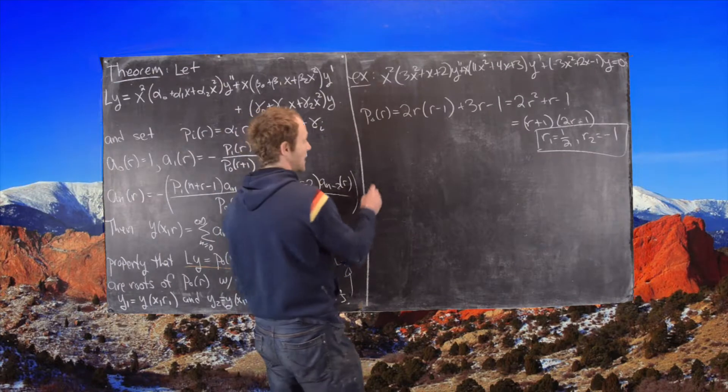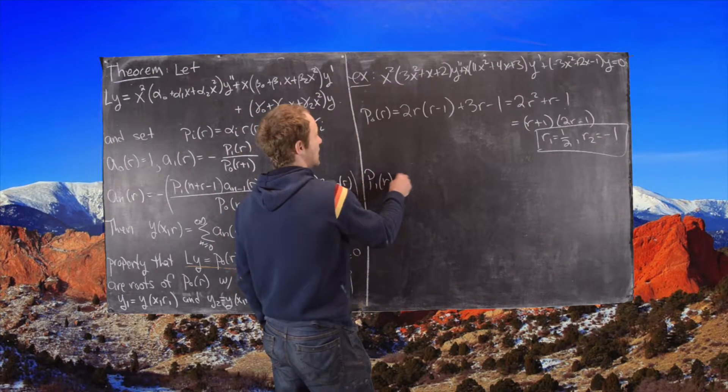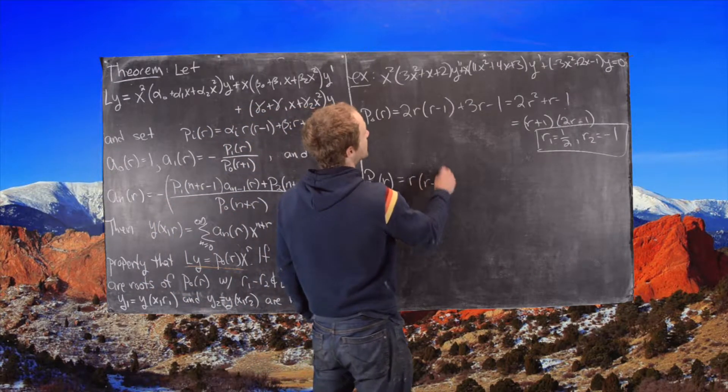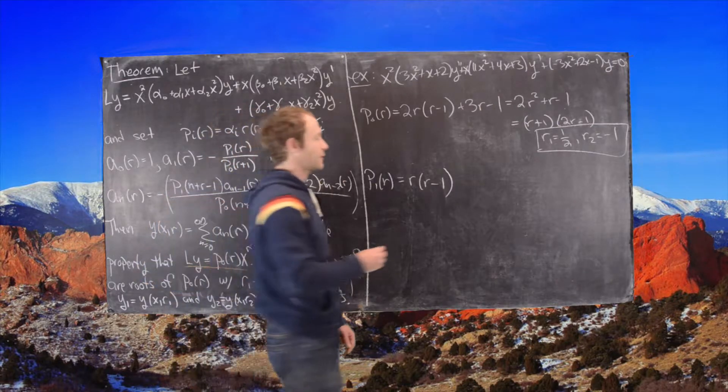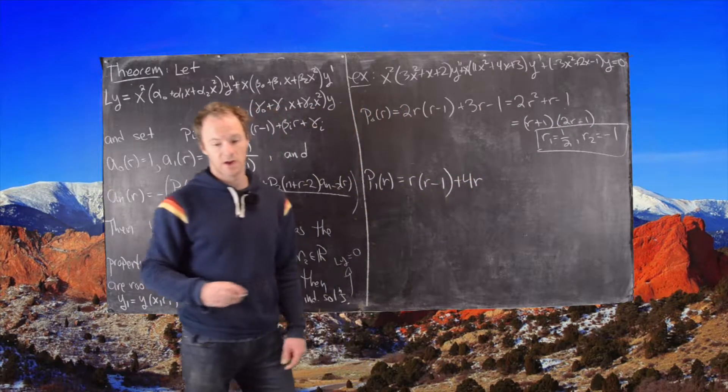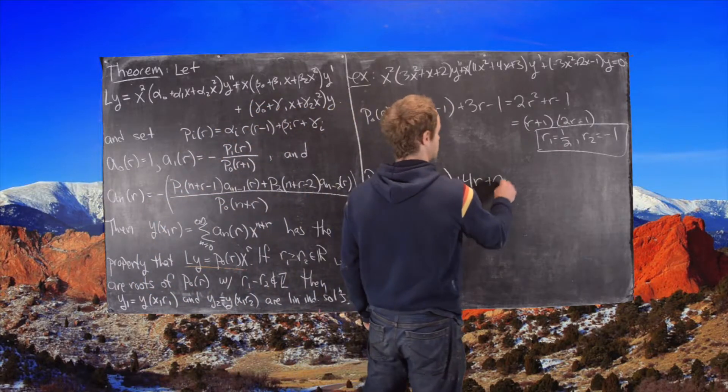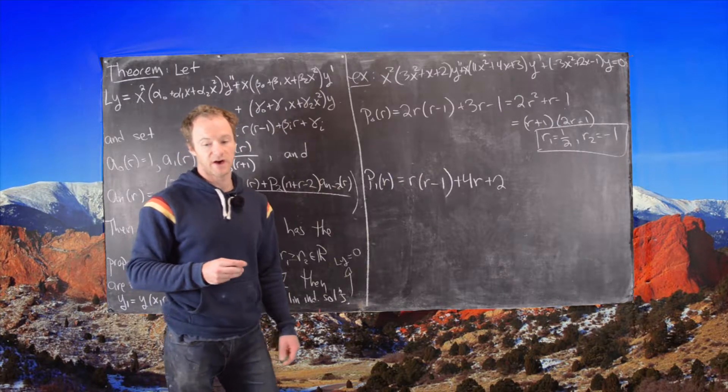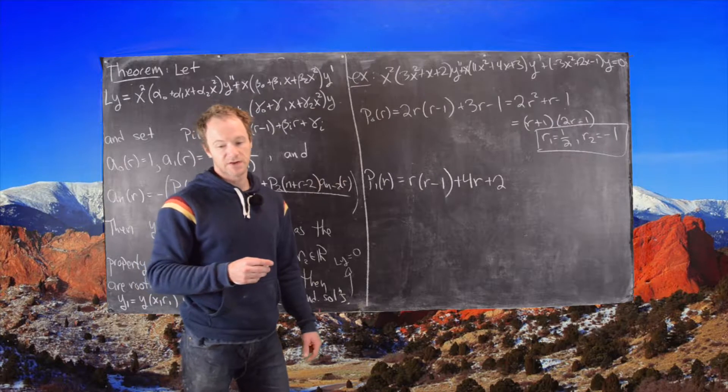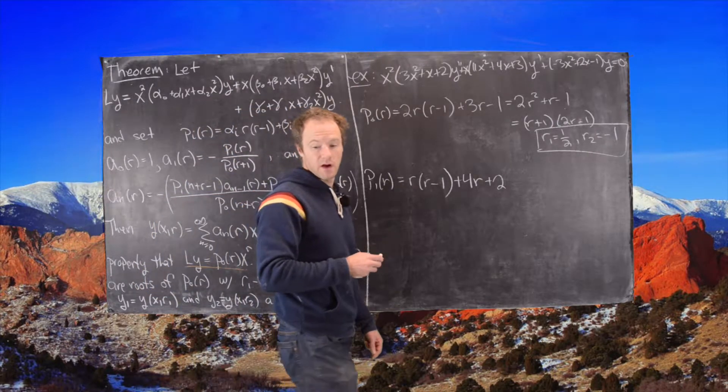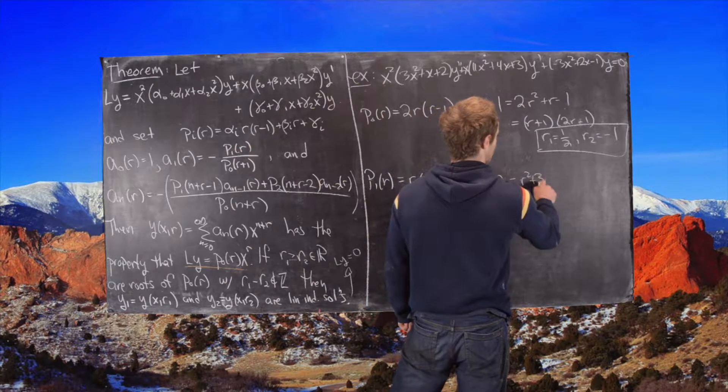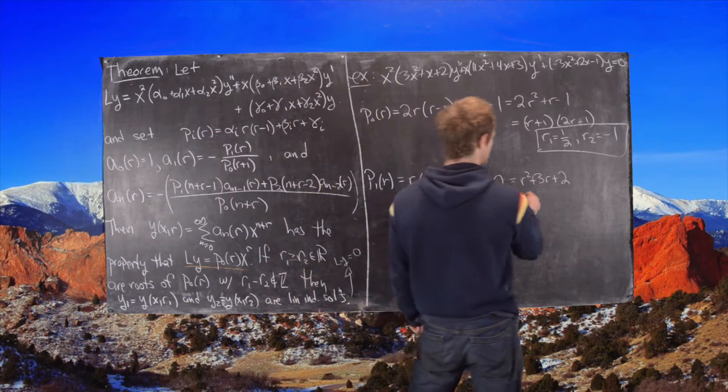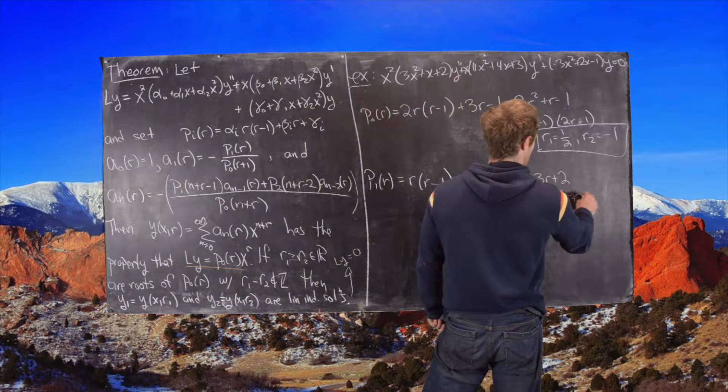Now let's go ahead and write p_1. So we have p_1 of r. So using the same strategy we have p_1 of r is r times (r minus 1) and then plus 4r and then plus 2. And then notice that is going to give us the following. So that will give us r squared plus 3r plus 2. And then that thing factors like (r plus 1)(r plus 2).